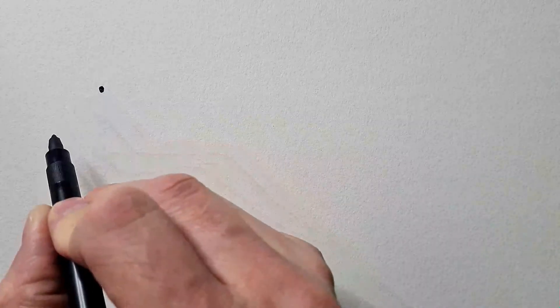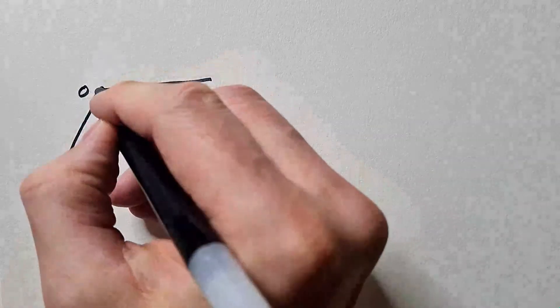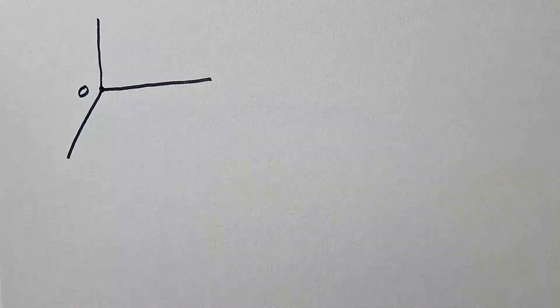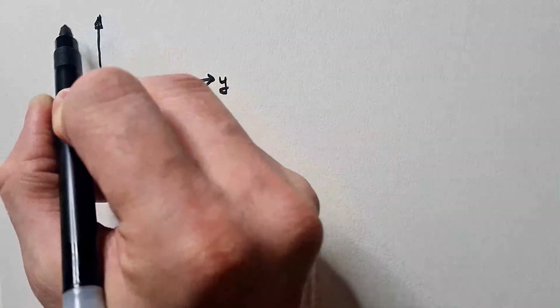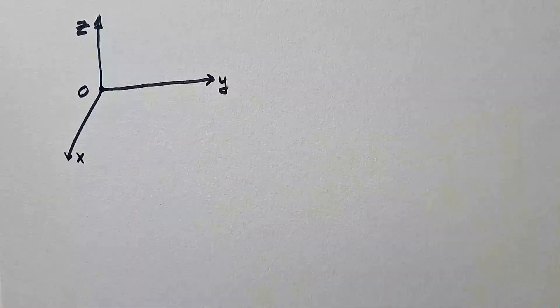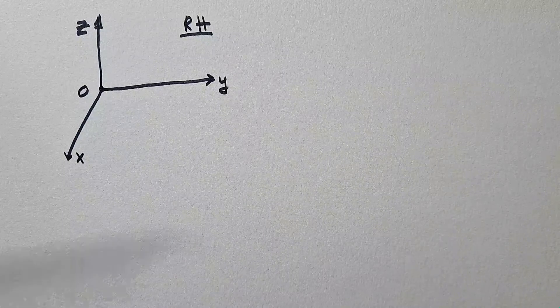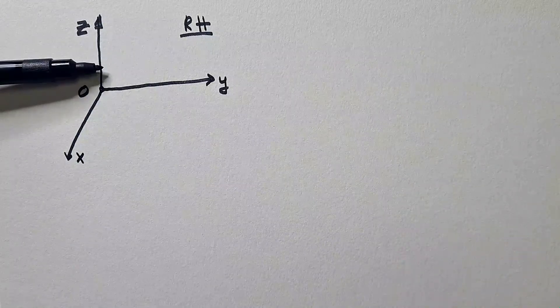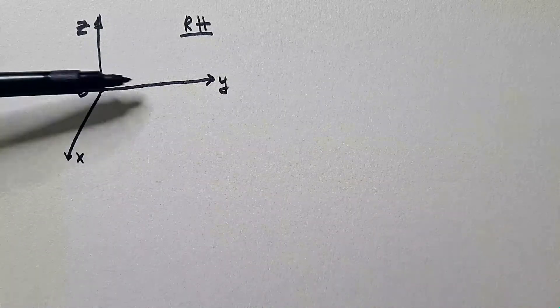A Cartesian coordinate system has an origin O and three coordinates representing three directions in space. These are X, Y, and Z coordinates. What I draw here is what we call a right-handed coordinate system, because if we look against the Z direction, we need a 90-degree counterclockwise rotation to move OX into OY.